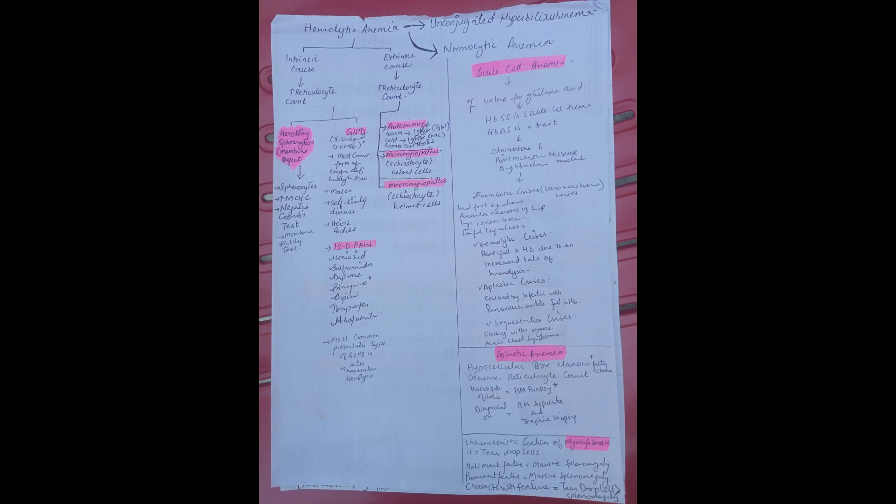Now if you see hereditary spherocytosis, spherocytes are seen in hereditary spherocytosis. MCHC level is increased. The Coombs test is going to be negative. And osmotic fragility test is diagnostic for hereditary spherocytosis.